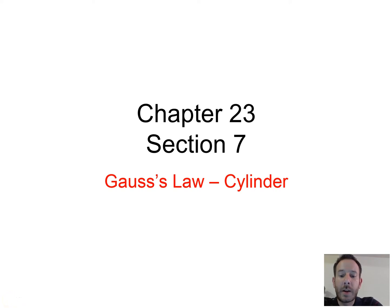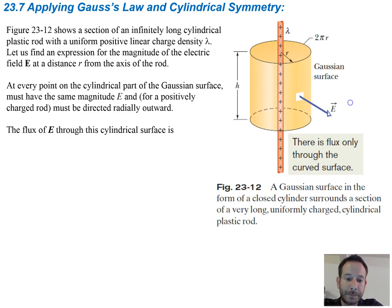In this video, we're continuing on with chapter 23, section 7, and discussing Gauss's law of a cylinder or an infinite line of charge. The figure shows a section of an infinitely long cylindrical plastic rod with a uniform positive linear charge density of lambda. Let us find an expression for the magnitude of the electric field E at a distance r away from the axis of the rod.